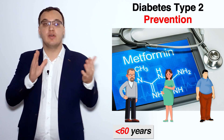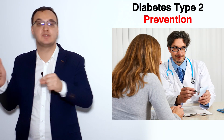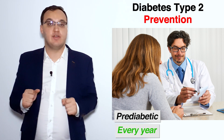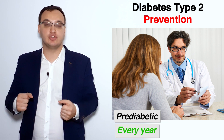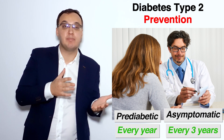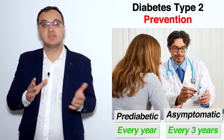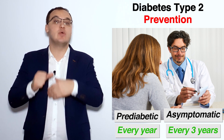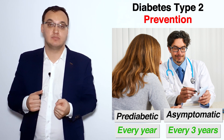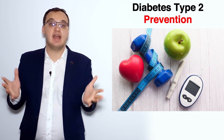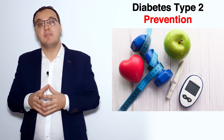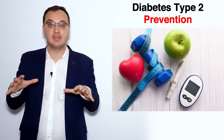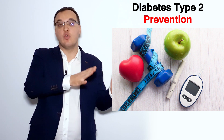We need to do regular checkups. How often? Every year if it's a pre-diabetic patient. If it's an asymptomatic patient with no symptoms and the lab values of fasting plasma glucose and hemoglobin A1c were normal, then we only need to do it every three years. That concludes the presentation on prevention — if we follow all these points, we cover what is needed.